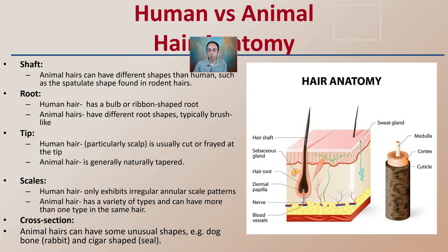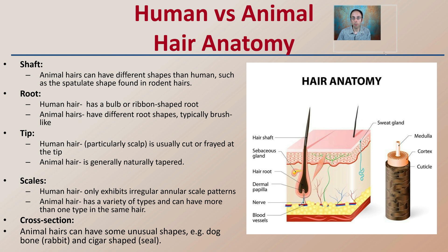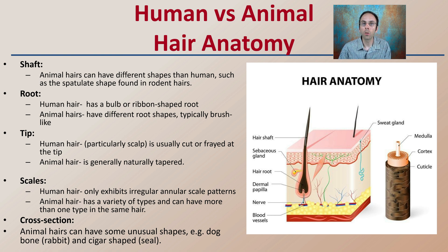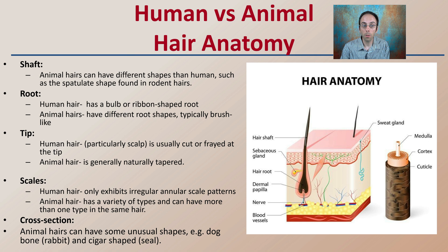The anatomy of human hair versus animal hair provides many comparison points. Looking at the shaft region, animal hairs tend to have different shapes than humans, such as the spatulate shape found in rodent hairs. Looking at the root, human hair will have a bulb or ribbon-shaped root, while animal hairs tend to have different shaped roots, typically brush-like in appearance. At the tip, particularly for human scalp hair, it is usually cut or frayed, while animal hair usually has a natural taper to it.